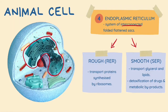Now let's look at the functions of each. The rough endoplasmic reticulum functions to transport proteins synthesized by the ribosomes on its surface, whereas the smooth endoplasmic reticulum functions to transport glycerol and lipids. The smooth endoplasmic reticulum also acts in the detoxification of drugs and metabolic byproducts.